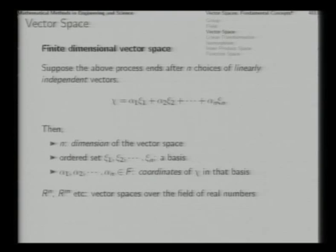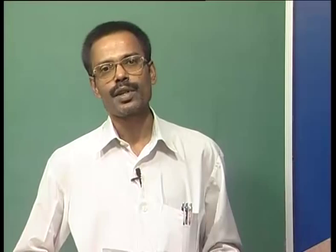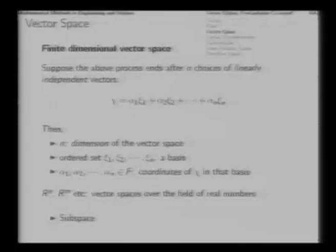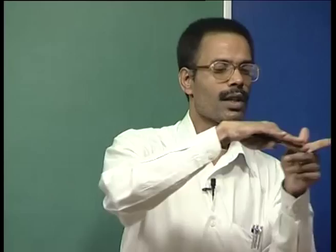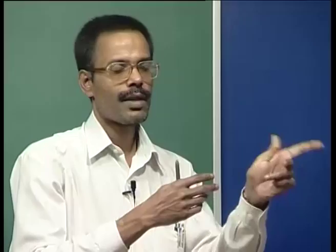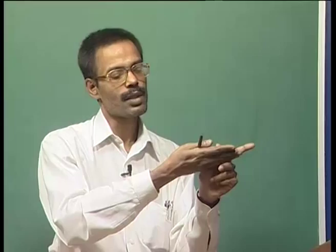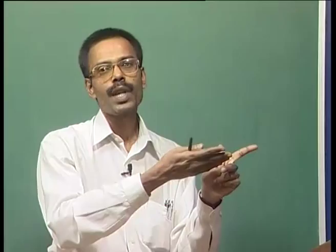We know that R^n, R^m, etcetera — vector spaces over the field of real numbers — are such finite dimensional vector spaces. For a vector space, if a subset of it forms a vector space in its own right with the same underlying operations, then we say that constitutes a subspace. For example, in three-dimensional space, a plane passing through the origin actually defines a subspace, because the zero element is there and all the operations defined in the full space can be defined within the plane itself. So that plane constitutes a subspace of the three-dimensional vector space R^3.